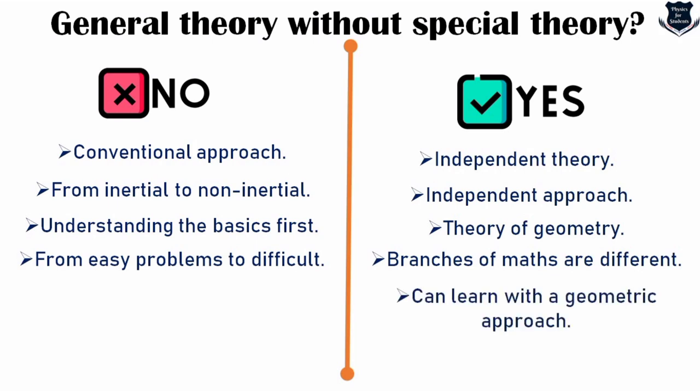General relativity deals with different branches of mathematics including tensors, differential geometry, diffeomorphisms, manifolds, and a little bit of topology. So yes, you can approach it independently because it deals with a different kind of mathematics not closely related to special relativity — it is more of a geometrical theory. I'm not saying you must go with either the 'no' or 'yes' approach; both are valid and I just presented both perspectives.